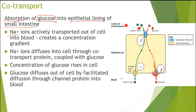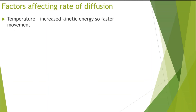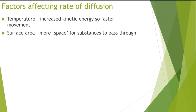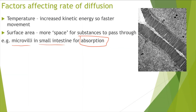That is how glucose is transported from the lumen of the small intestine into the blood. You also need to be aware of the factors affecting the rate of diffusion. First, temperature — this increases the kinetic energy so particles move faster, resulting in faster movement. Next, surface area — the higher the surface area, the more space there is for substances to pass through. An example is the microvilli in the small intestine: instead of a straight cell membrane, the microvilli arrangement increases surface area, so more absorption can occur.